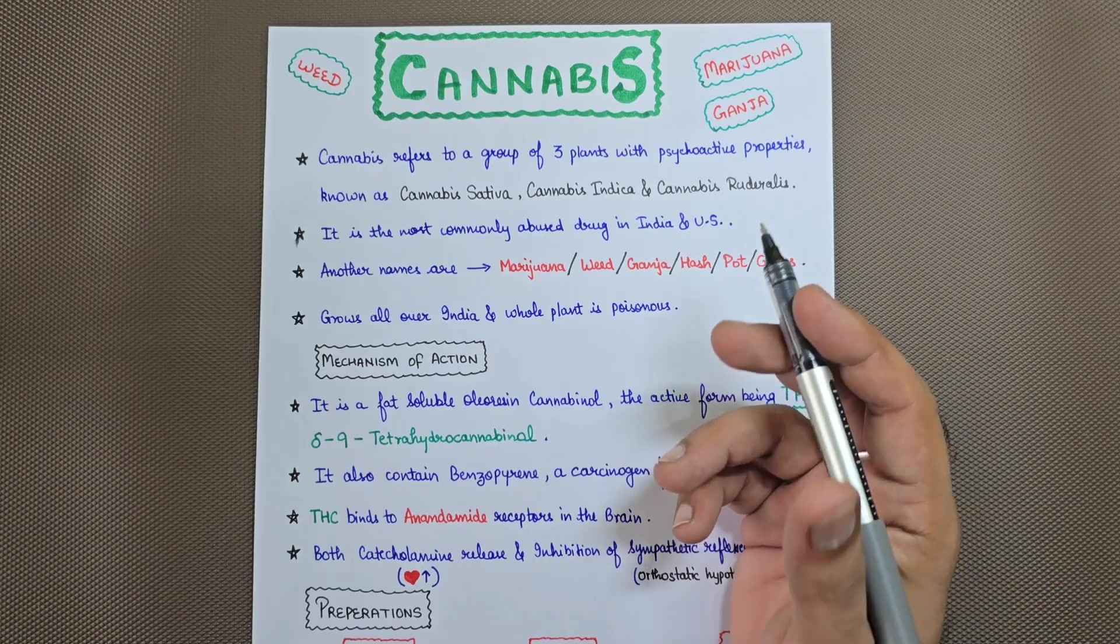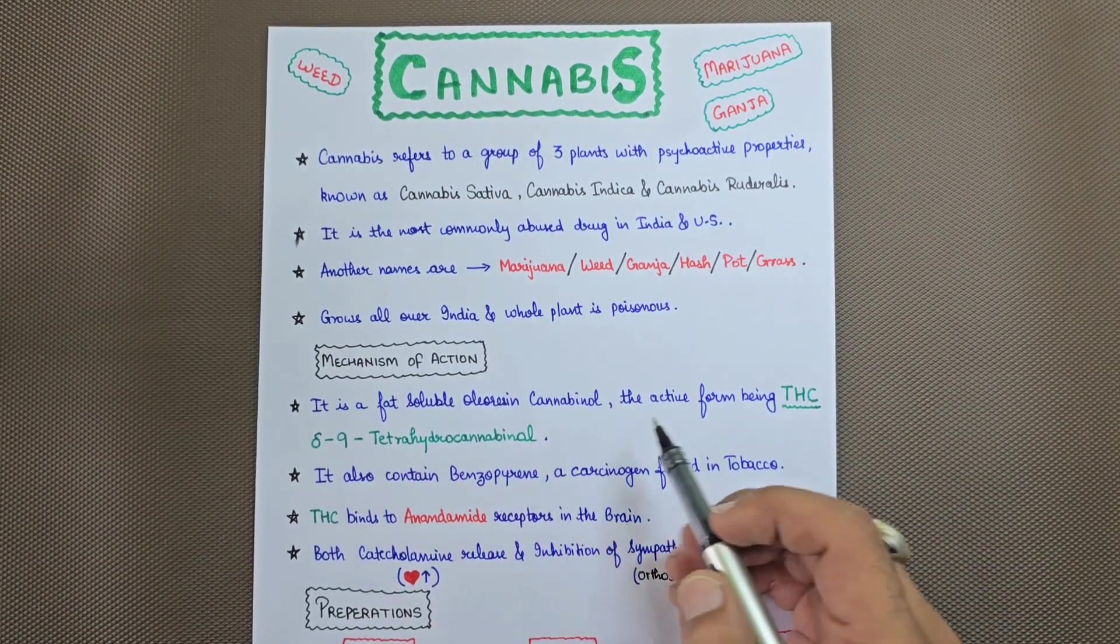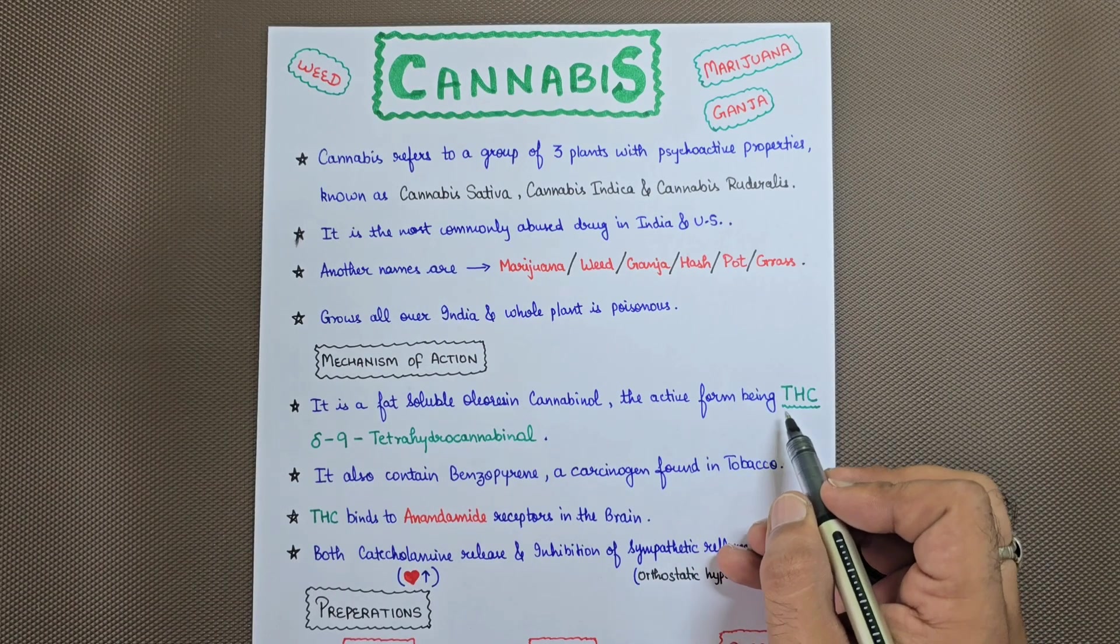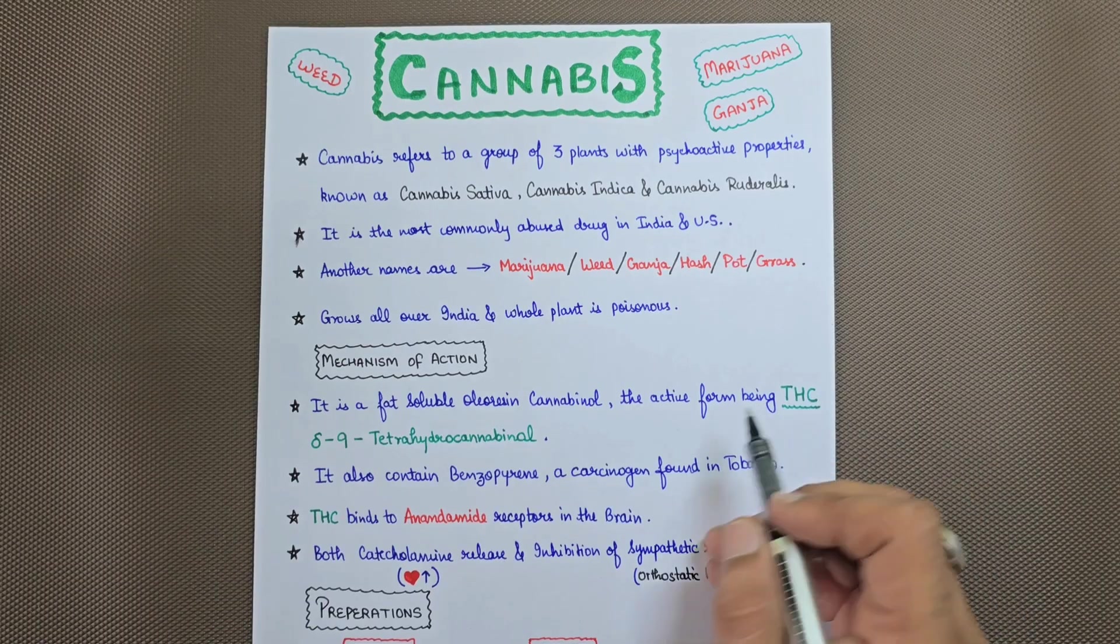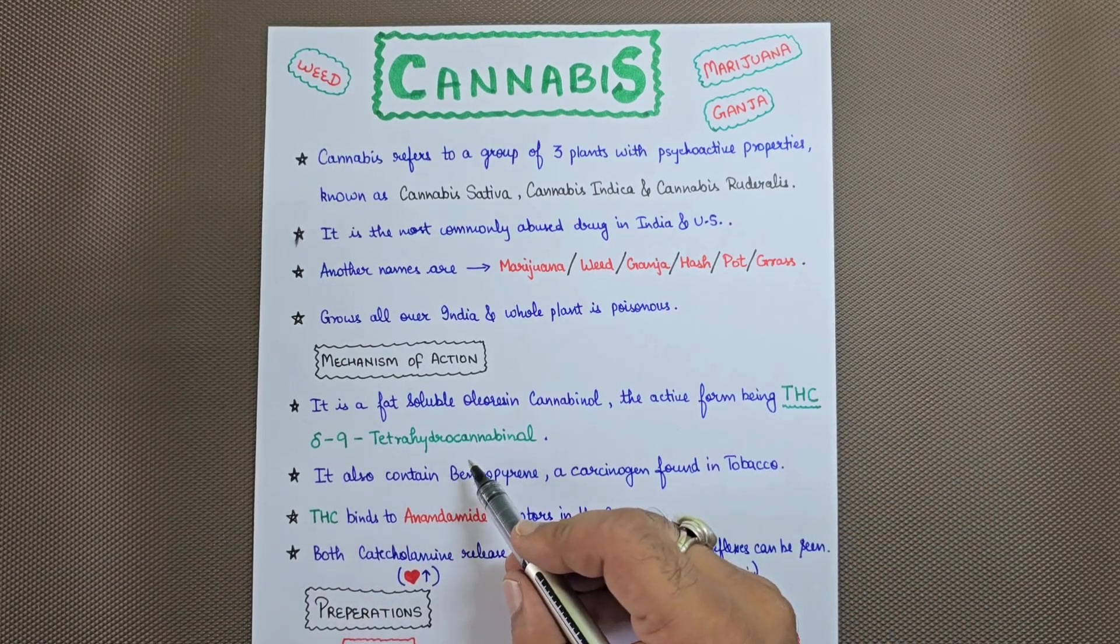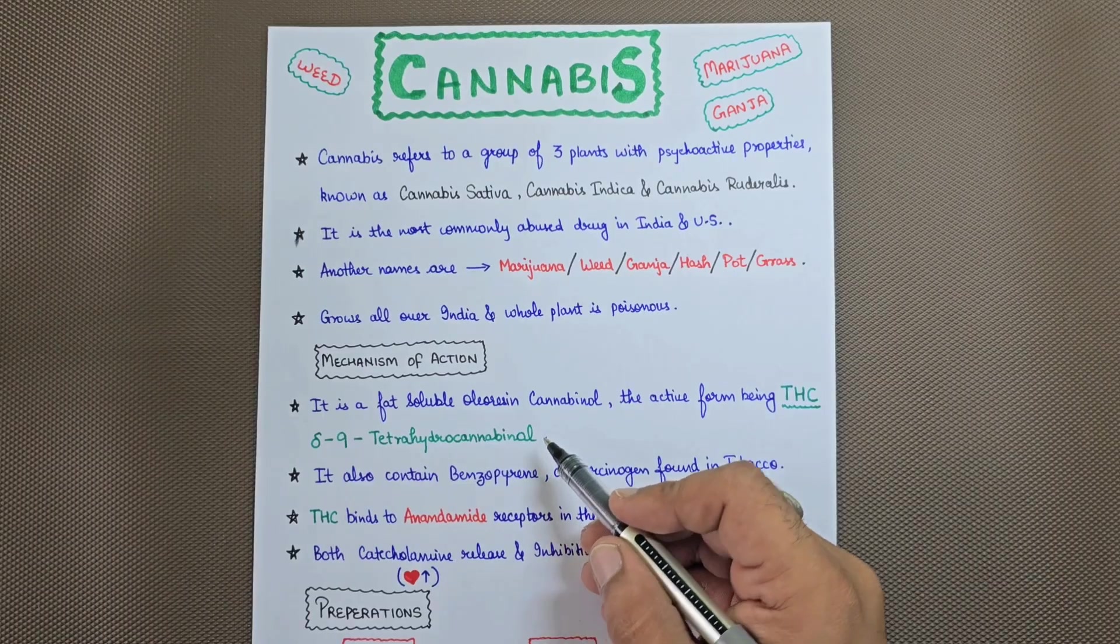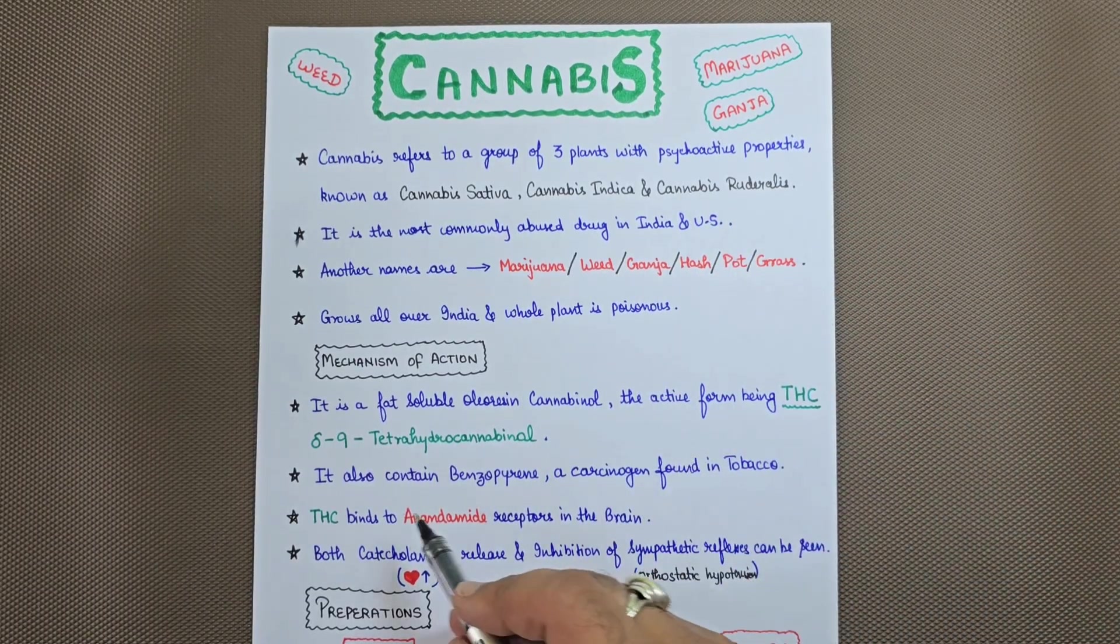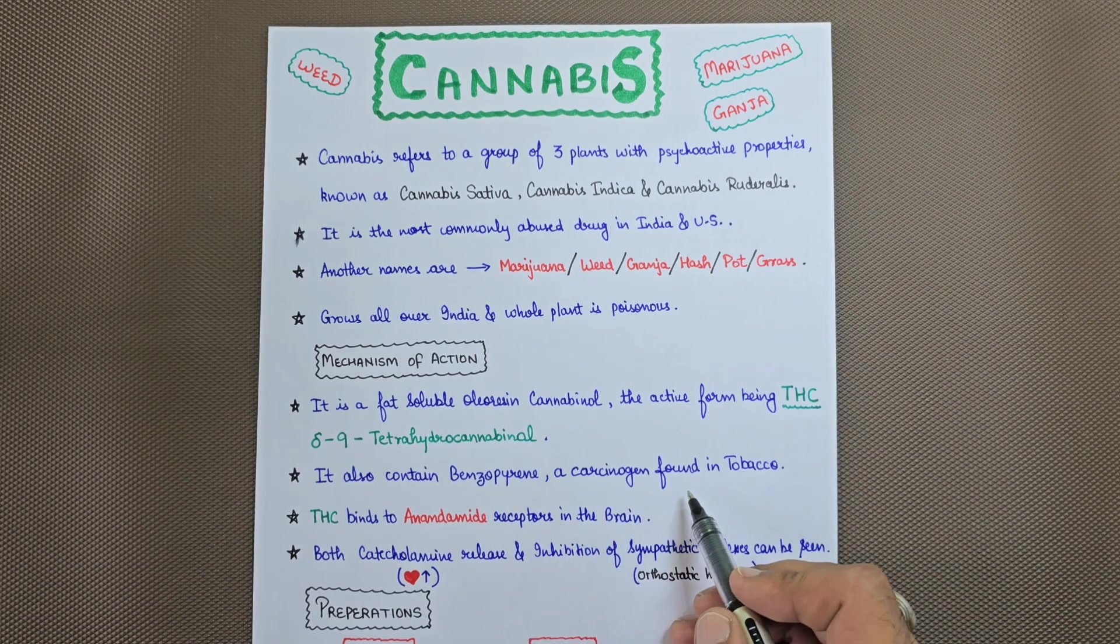What is the mechanism of action of cannabis? It is a fat-soluble oleoresin cannabinol, the active form being THC. THC is delta-9-tetrahydrocannabinol, the main component that leads to the psychoactive effect in a person who is consuming it. It also contains benzopyrene, which is a carcinogen found in tobacco.